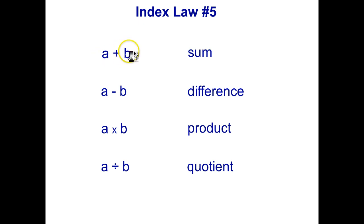If you're adding two terms together that's called a sum, subtracting two terms is a difference, multiplying two terms is called a product, and what we need for this video is if you divide two terms the answer is called a quotient.